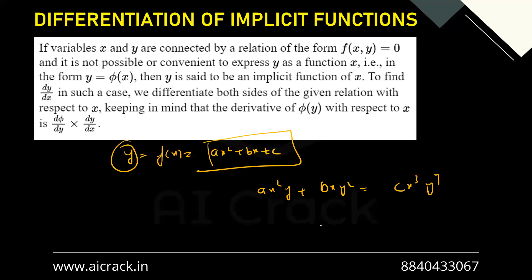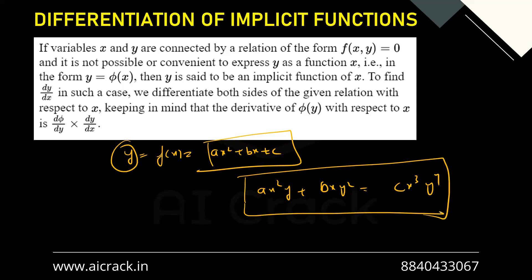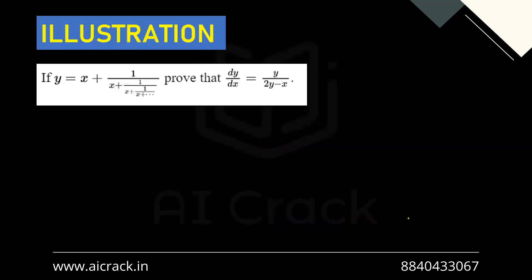To differentiate implicit functions, we differentiate both sides term by term — applying chain rule, product rule, or quotient rule as needed — and then isolate y' on one side with the remaining terms on the other side to find the value of y'.